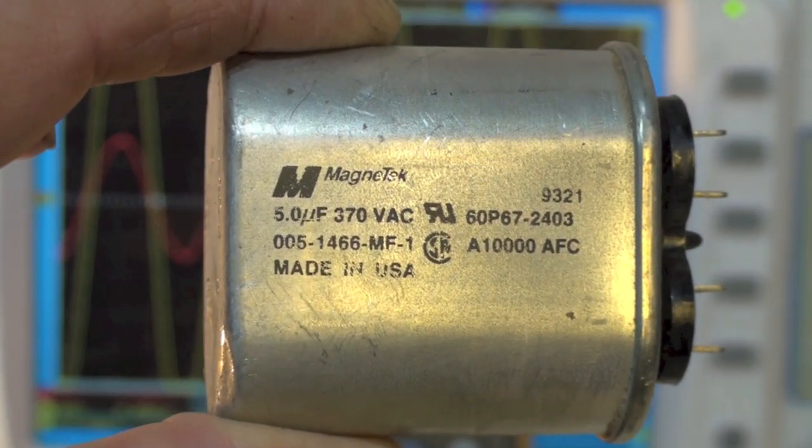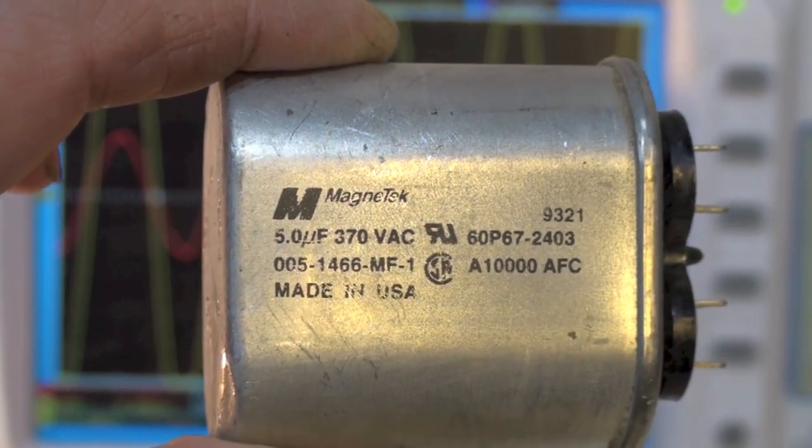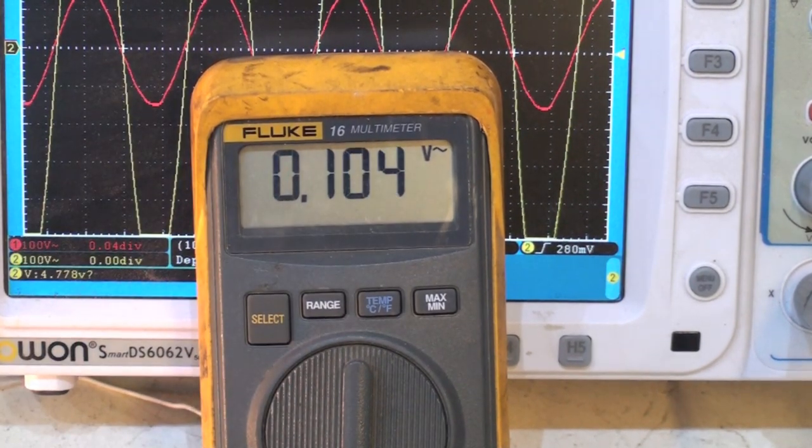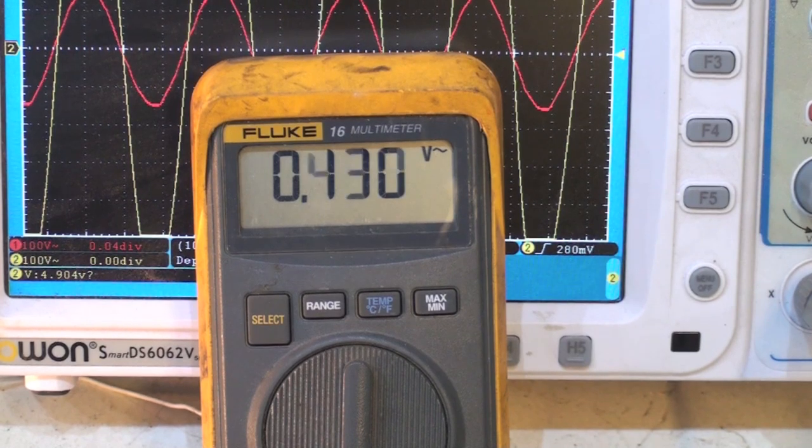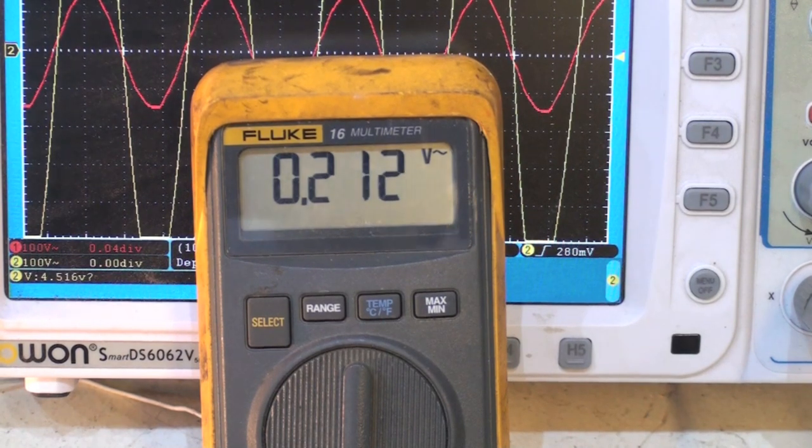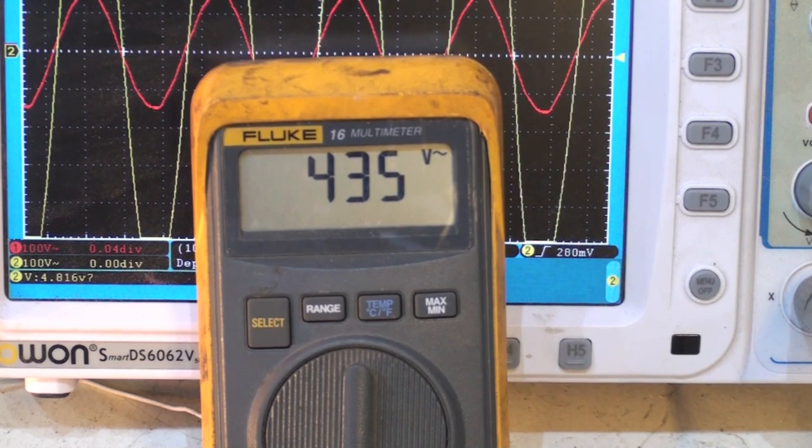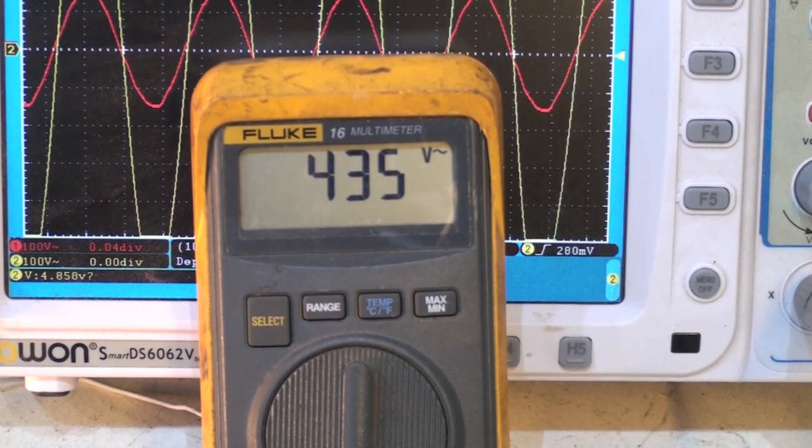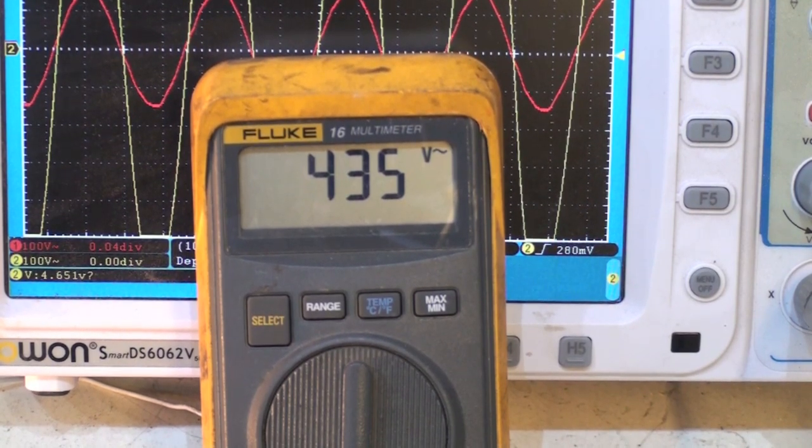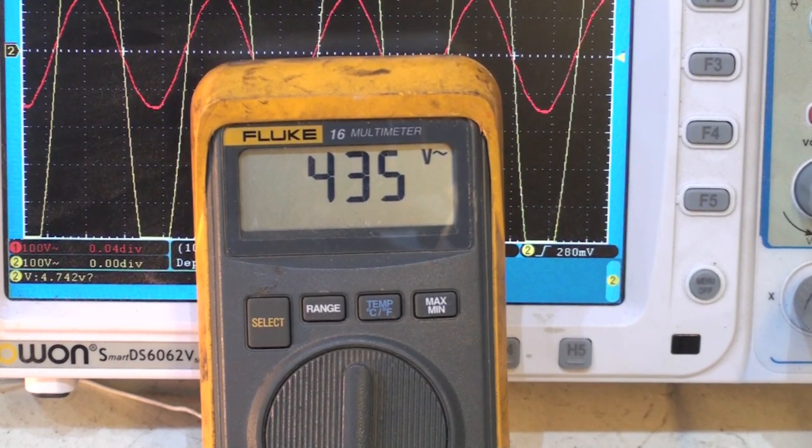Right here is the capacitor for this motor: 5 microfarads at 370 volts AC. I've got a voltmeter set up, and I'm going to check the voltage between the start and the common. I thought there was something wrong with my meter. It's 435. There's 435 volts between start and common of this motor while it's running.